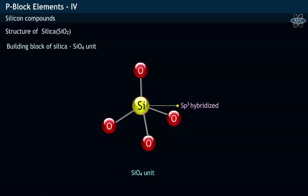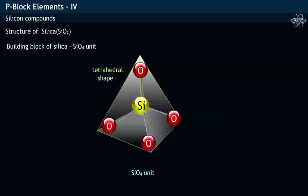Each silicon atom in the SiO4 unit is attached to four adjacent oxygen atoms in a tetrahedral fashion and has a bond angle of 109 degrees.